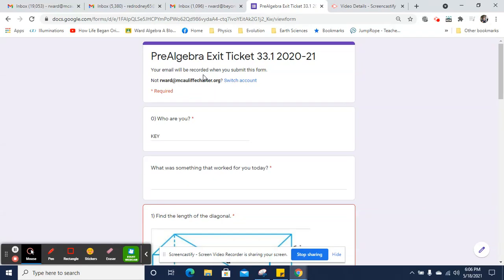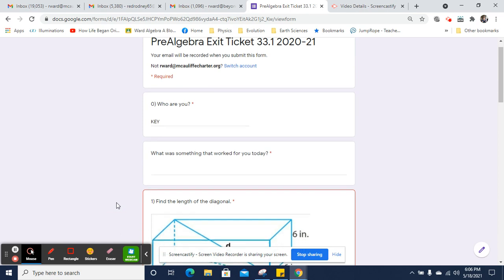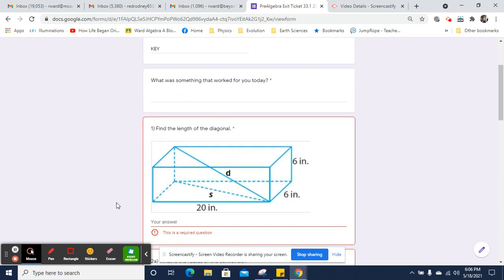This is Mr. Warden. This is the pre-algebra exit ticket 33.1 video key, and we're going to take a look at a 3D diagram theorem question.